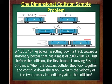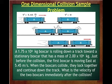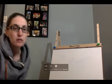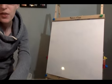Let's look at a one-dimensional collision sample problem. A 1.75×10⁴ kg boxcar is rolling down a track toward a stationary boxcar with a mass of 2.00×10⁴ kg. Just before the collision, the first boxcar is moving east at 5.45 m/s. When the boxcars collide, they lock together and continue down the track. What is the velocity of the two boxcars immediately after the collision?